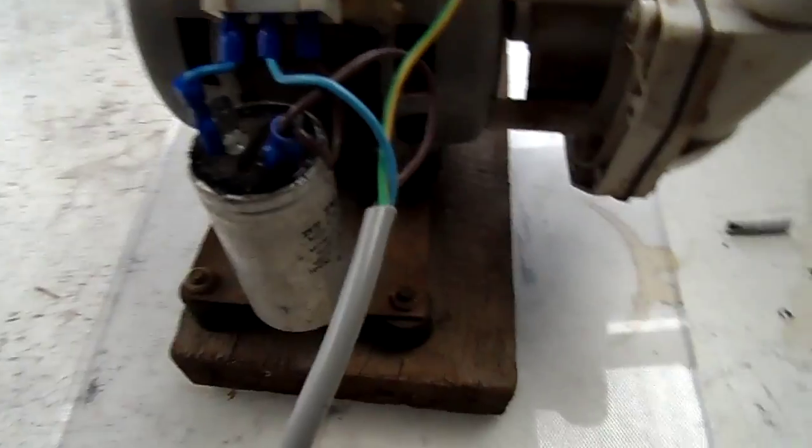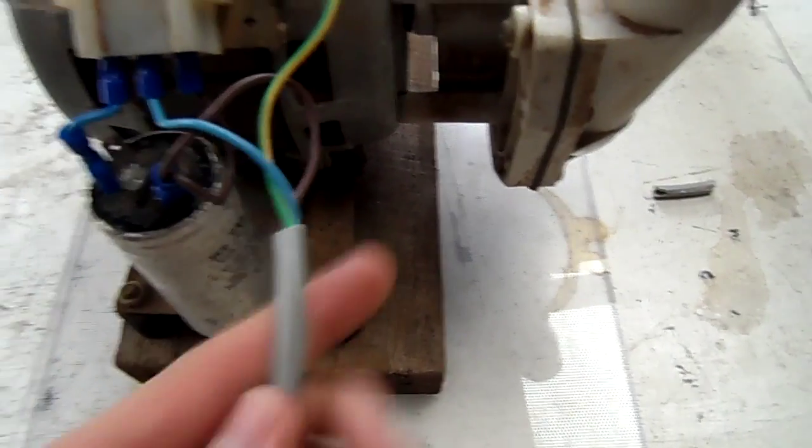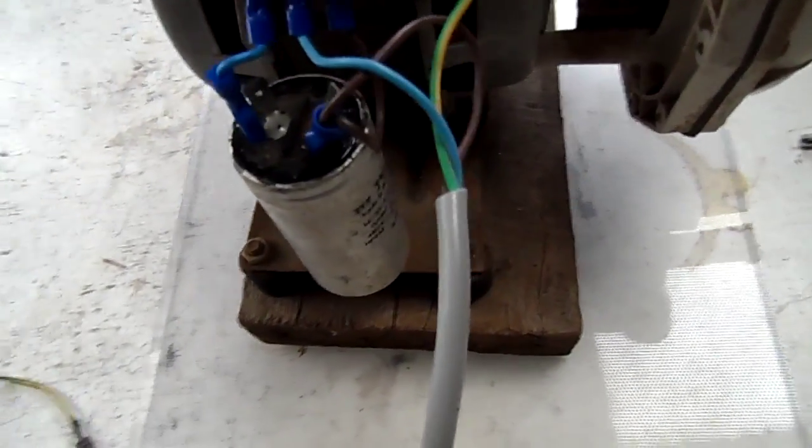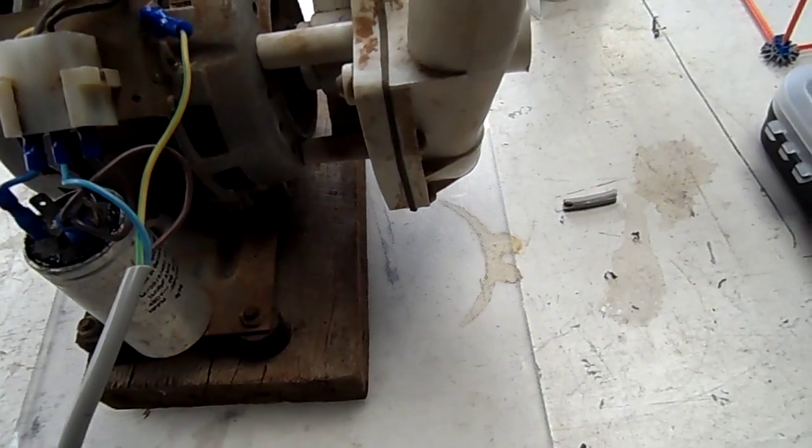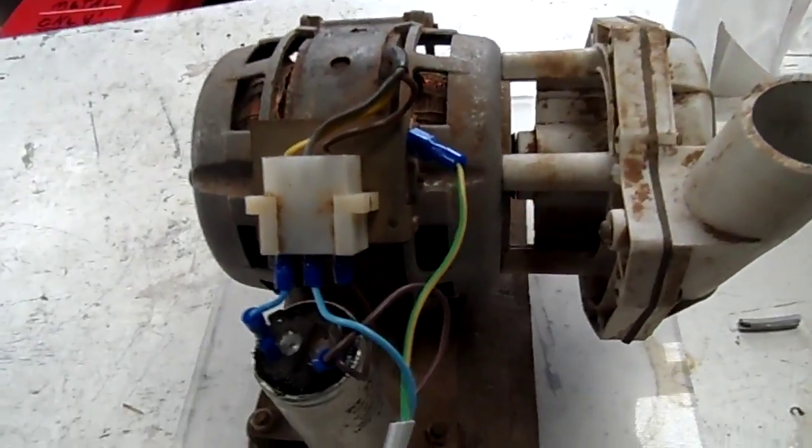The way to wire these up is your common goes to the middle. Your run goes to one of the terminals on the cap and then onto your active on the motor, and then the third one goes to the other side of the cap, which is the common for the cap start. But if you're running these on a variac, you don't need any of that. You just need the middle and the brown or red or whatever it is. Different motors vary.